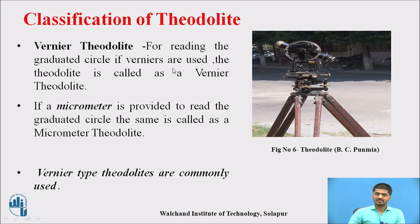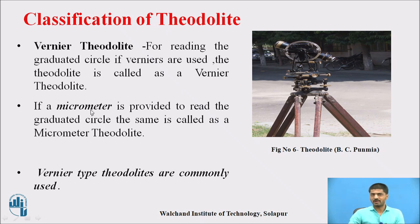For vernier theodolite, verniers are used for reading the graduated circle. If a micrometer is used instead to read the graduated circle, it is called a micrometer theodolite. Nowadays, vernier type theodolites are commonly used to identify angles, distances, and for remaining survey works.